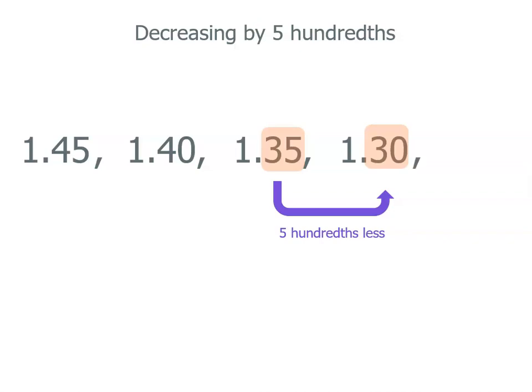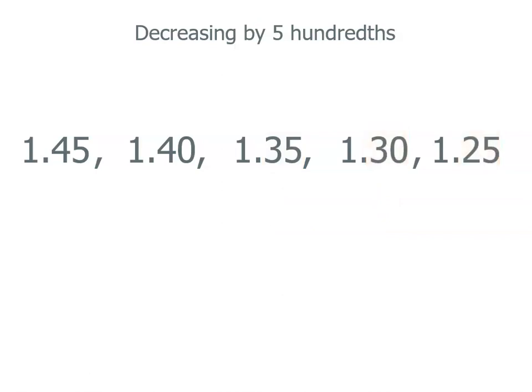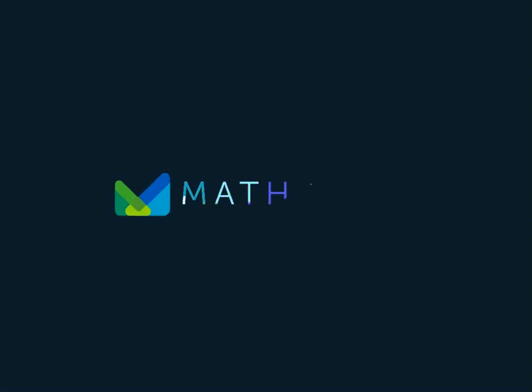And what about the last number? Take a second to work it out. Did you get 1 and 25 hundredths? There's our pattern — we're decreasing by 5 hundredths each time.